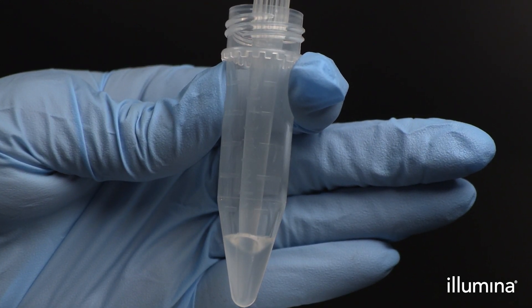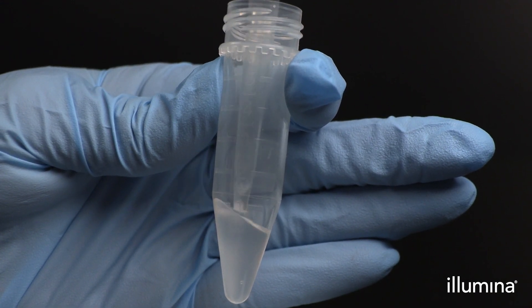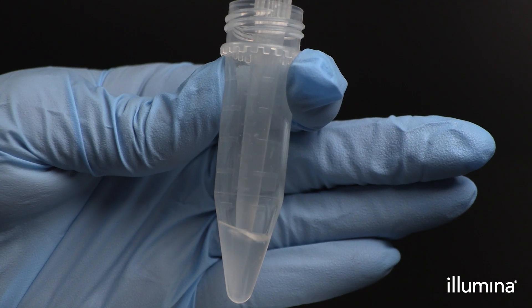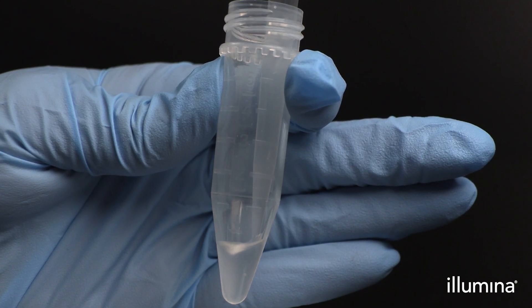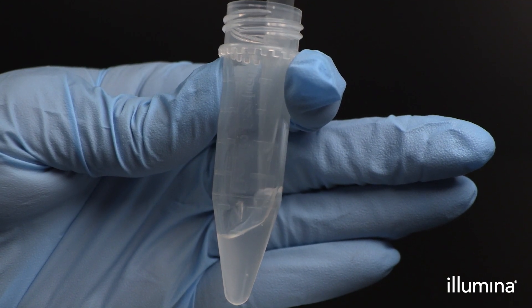Mix the cell PIP mixture 10 times using a standard-bore, low-retention P1000 pipette tip set to 650 microliters. It is important to pipette mix slowly to the first stop only, to avoid creating foam or excessive bubbles.